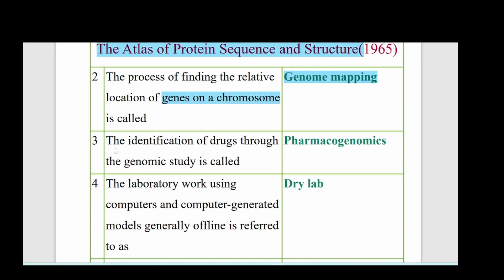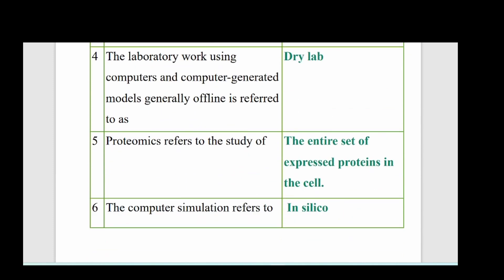Third question: the identification of drugs through the genomic study is called pharmacogenomics. Fourth question: the laboratory work using computers and computer-generated models generally offline is referred to as dry lab, also called in silico.